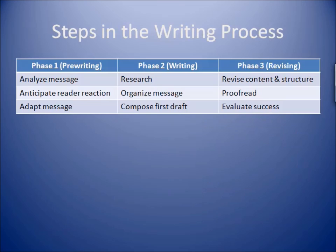Phase two, writing, begins by conducting informal or formal research to collect necessary information related to the message. The most logical place to search for information is, of course, the files in your office. However, you may also use print or electronic sources, personal interviews, and observations to obtain relevant information. Once you have sufficient information on your topic, you can begin to develop an outline, which serves as a roadmap to start composing your first draft.